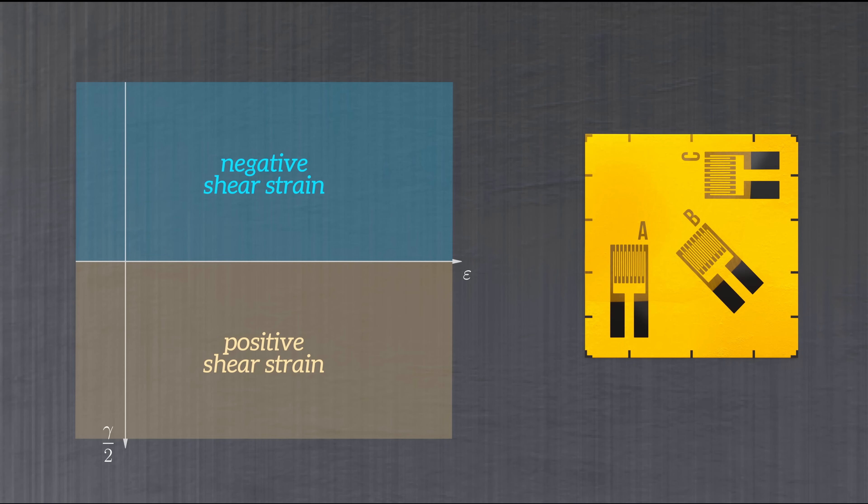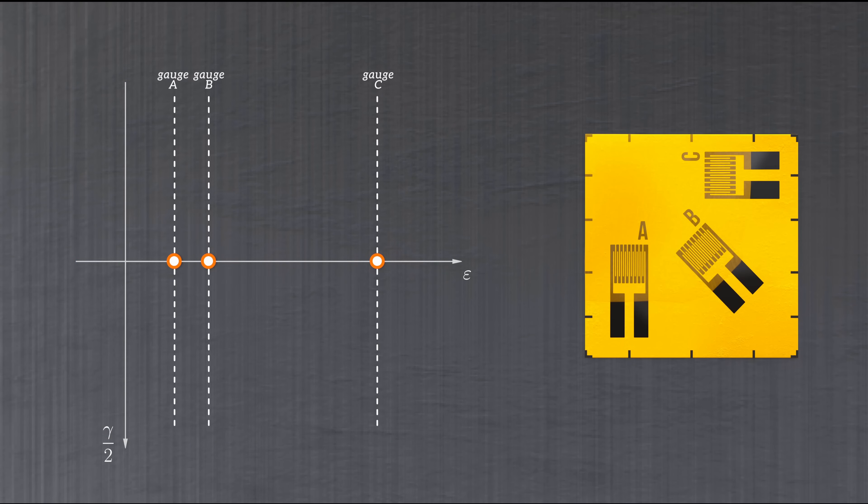Next, the normal strains obtained from the three strain gauges are drawn on the horizontal axis. Then the shear strain at gauge A is determined. For a rectangular rosette, where the three gauges are separated by 45 degrees, it's given by this simple equation, derived from the strain transformation equations. This defines the points on Mohr's circle corresponding to strain gauges A and C, because the two gauges are separated by 90 degrees, and so have equal, but opposite, shear strains.